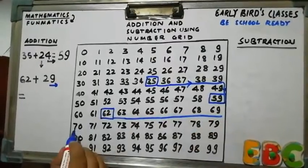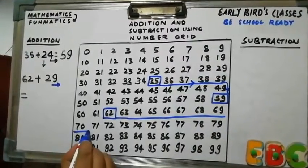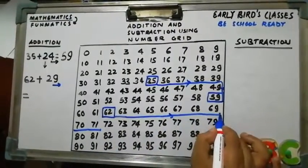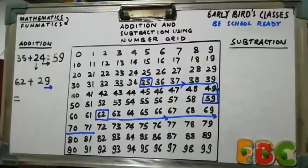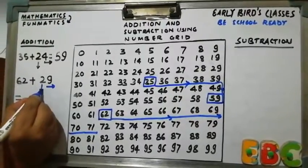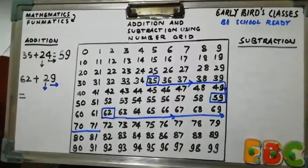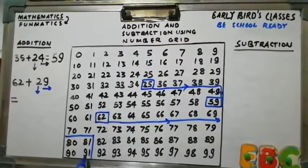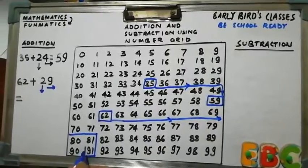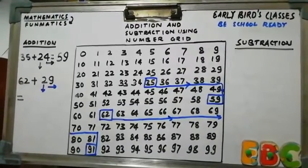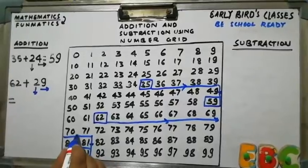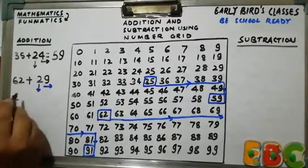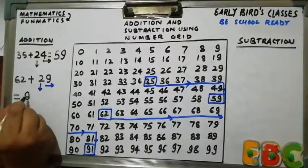Then we have to come here. 8, 9. We reached at 9. Right. Now we have to move two places downward, vertically downward. So downward. Where is that? What? 91. So 62 plus 29 will be 91.